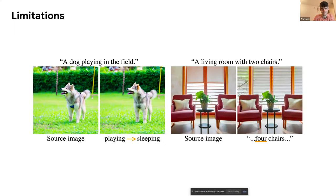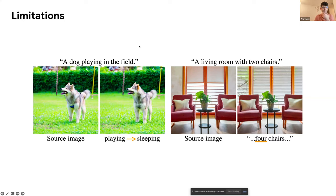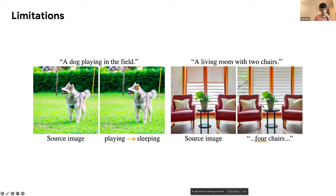One really big limitation of our work is that we cannot do manipulations that change structure. For example, if we want a dog to be lying/sleeping on the grass, we cannot do such things. We also cannot remove items or add items to the photo by only changing the text prompt.